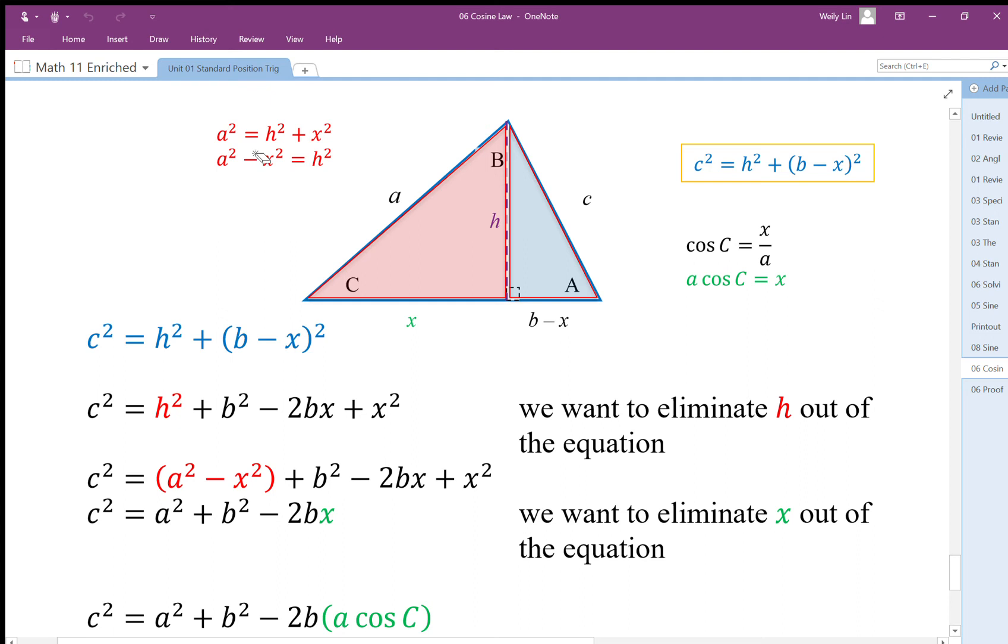We expand it out. This h² gets replaced with a² minus x². This black part here is expansion of (b - x)² all squared. Now at this point, you can see that the negative x² and positive x² form a zero pair.